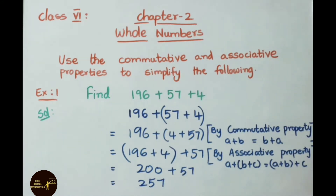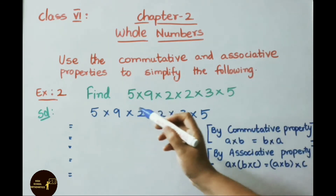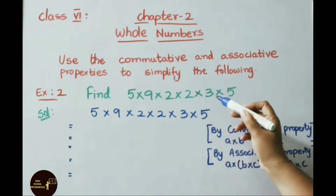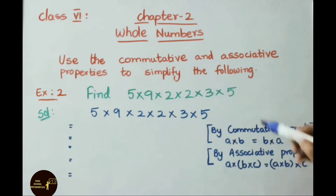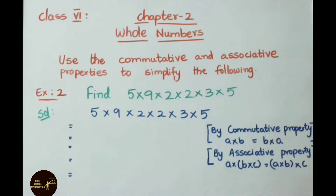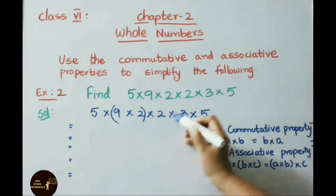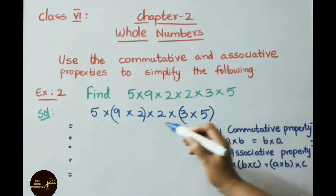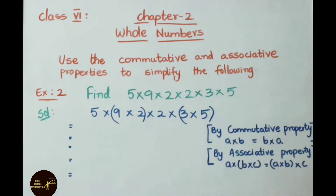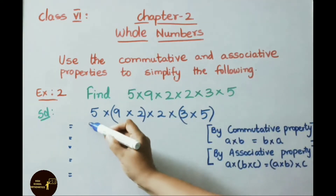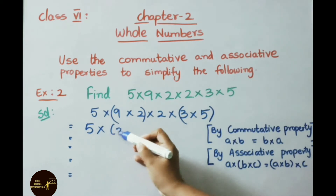See Example 2: find 5 into 9 into 2 into 2 into 3 into 5. Now let us see the solution. I am going to take two of these numbers and apply the commutative property: A into B can be written as B into A. So we write 5 into 2 into 9.